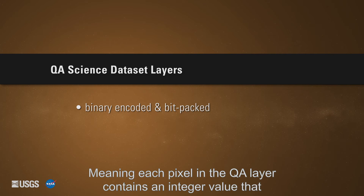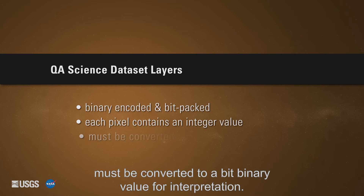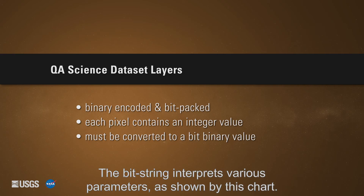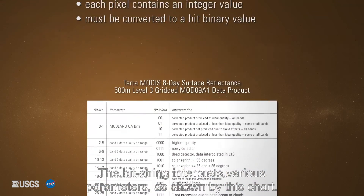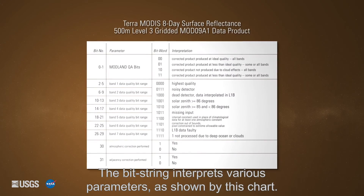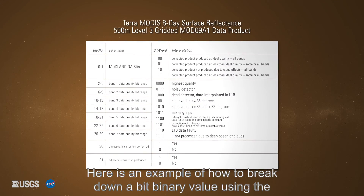The QA science data set layers are binary encoded and bit packed, meaning each pixel in the QA layer contains an integer value that must be converted to a bit binary value for interpretation. The bit string interprets various parameters as shown by this chart.